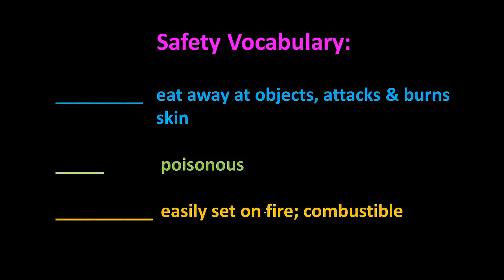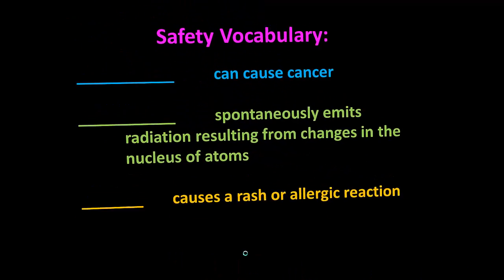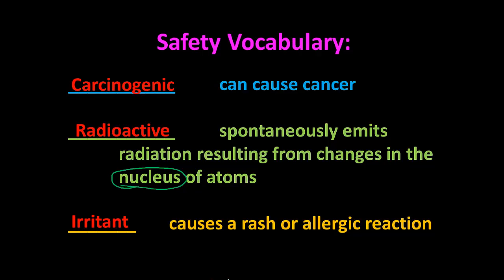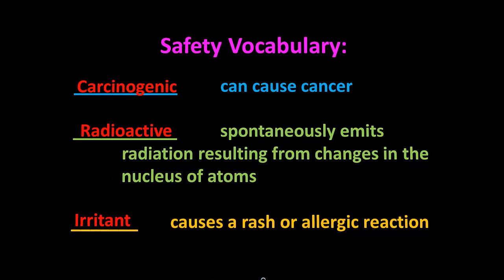Safety vocabulary: Corrosive — eats away at objects, attacks and burns skin. Toxic — means poisonous. Flammable — easily set on fire or combustible. Carcinogenic — can cause cancer. Radioactive — spontaneously emits radiation resulting from changes in the nucleus of the atom; that will be covered in our last unit. Irritant — causes a rash or an allergic reaction.